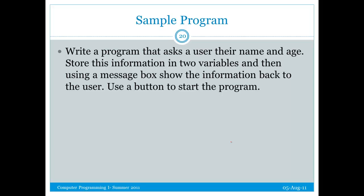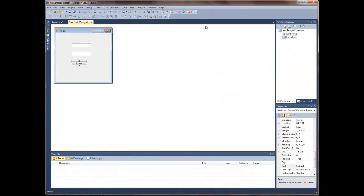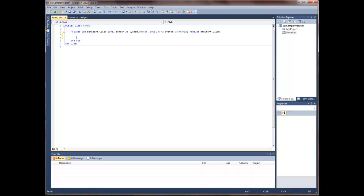Alright, so we want to write a program that asks a user for their name and age. Store this information in two variables and use a message box to put the information back to the user. We want to use a button to start the program. So let's take a look here. This is Visual Studio. And we have our two text boxes and our button. So I've already got some code here.